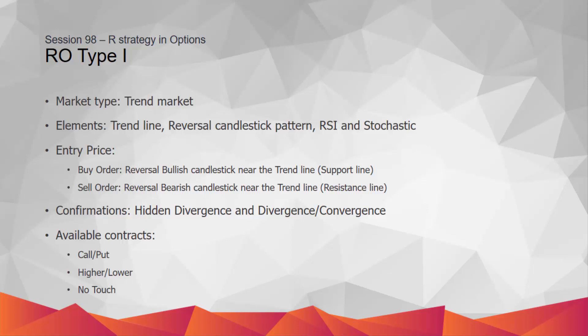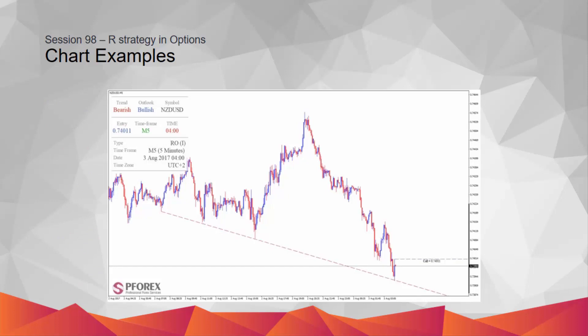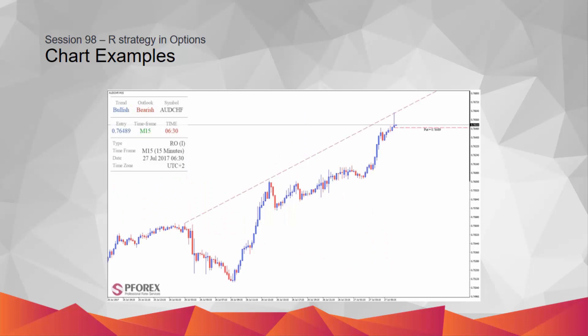Now let's check some examples of this strategy. The New Zealand dollar against US dollar price has decreased, and the trend line can be plotted by connecting three valleys. The price proceeded toward the trend line, which acts as a support line. An engulfing candlestick pattern appeared near the trend line to specify the reversal spot toward up. The next example shows a bearish signal in which the trend line or resistance line connects the peaks on a bullish trend. As price went near the trend line, a shooting star pattern formed, and the reversal spot is determined for the downward trend.